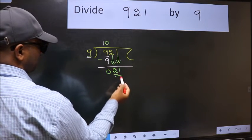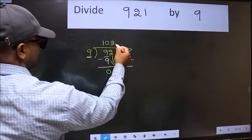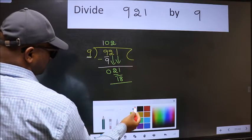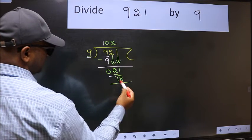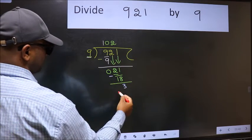Now 21. A number close to 21 in the 9 table is 9 times 2 is 18. Now we should subtract. We get 3. No more numbers to bring down, so we stop here.